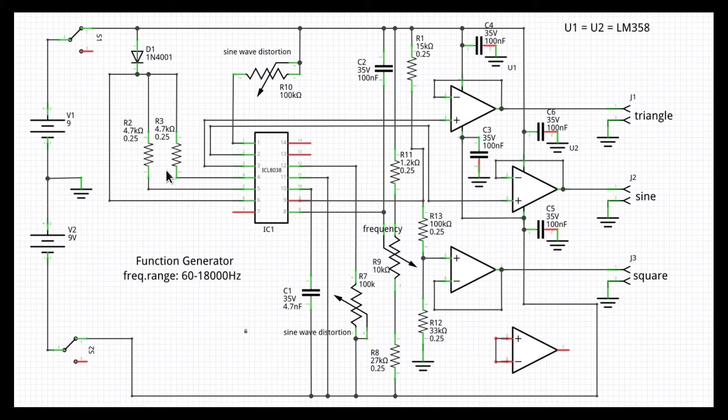For what concerns the power supply, you have two options. Either use a couple of 9V batteries, which can be excluded using this S2 switch, which would be a 2P2T, or use your benchtop power supply, set to provide anything between 9 plus 9V and 12 plus 12V.